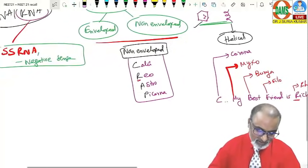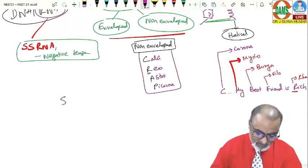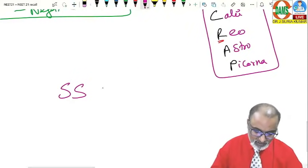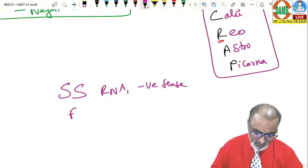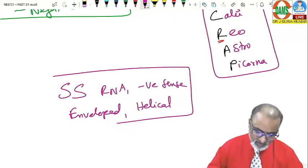So, based on this conclusion, I will say measles virus is a single-stranded RNA virus, negative sense, enveloped, helical symmetry. This is the basics.